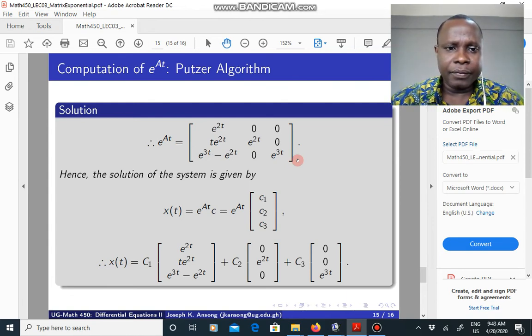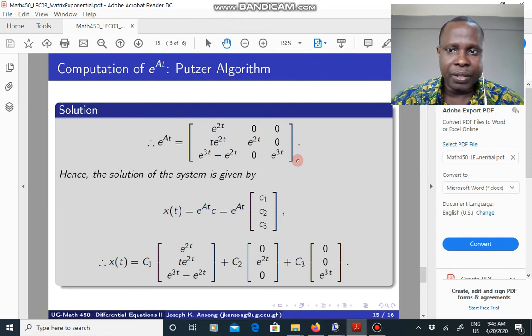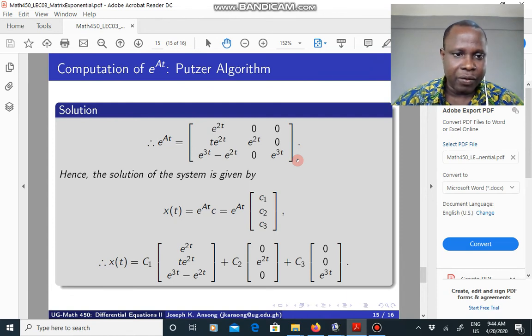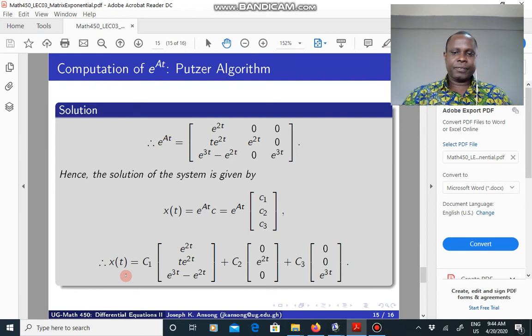So the Putzer algorithm approach is quite straightforward. As I mentioned before, most textbooks will just go straight away to this Putzer algorithm when they want to compute the matrix exponential. So it's quite powerful. But once again you have to be careful how you arrange your eigenvalues, eigenvectors. So once we have the matrix exponential we can solve for the solution. It's just equal to the matrix exponential times a constant vector. Take this multiply by vector and that gives you this expression here for the solution to the system.